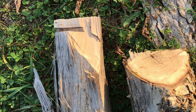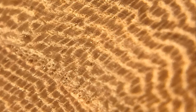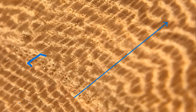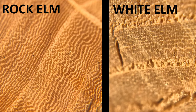Looking at the end grain of rock elm: the pores in the early wood are not that much bigger than the pores in the late wood — there are multiple rows of small early wood pores instead of fewer rows of very large ones. That's what distinguishes rock elm from the soft elms. My source is the Wood Database, which notes that other hard elms in North America — cedar elm, September elm, and winged elm — will have the same structure as rock elm. You can tell soft elms from hard elms, but not all hard elm species from each other. This does not apply to elms from other continents.